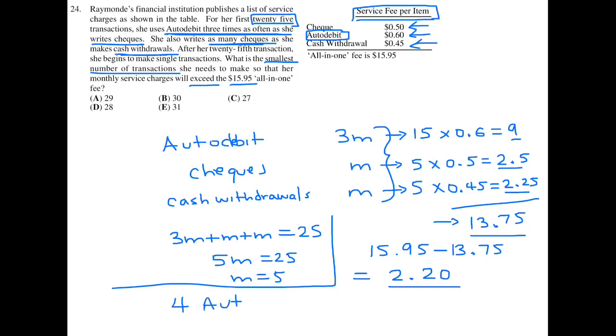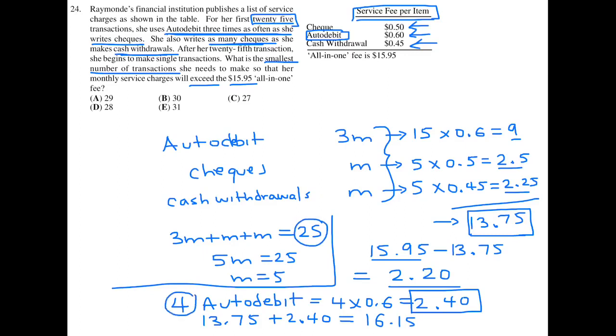So, if I do auto debit, say, four times, that will be how much? Well, it will be four times 0.6, which is $2.40. And, if I already have spent $13.75, and I had spent an additional $2.40, I will have 13.75 plus 2.40. And, that will indeed exceed $15.95, as it will be exactly $16.15. So, I had my original 25 transactions, and I made an additional four, for a total of 29. So, the answer is A.